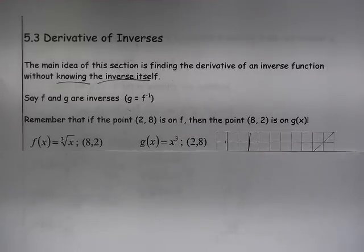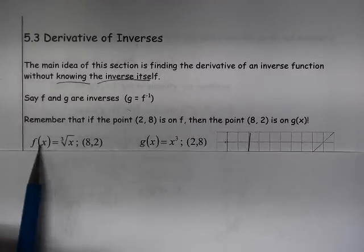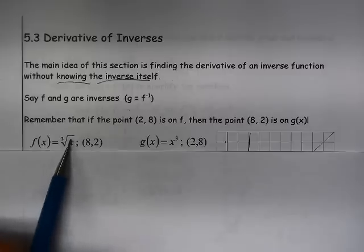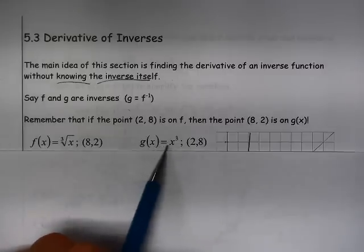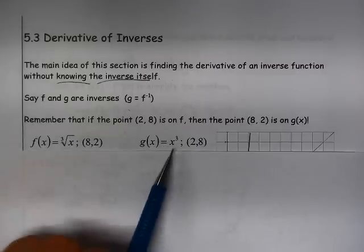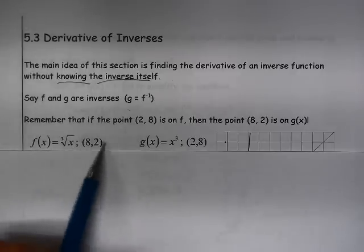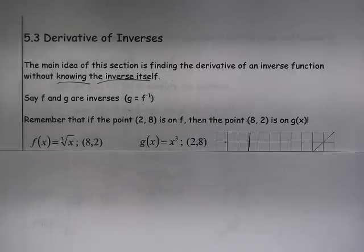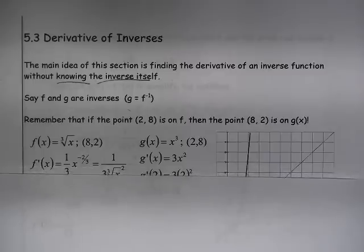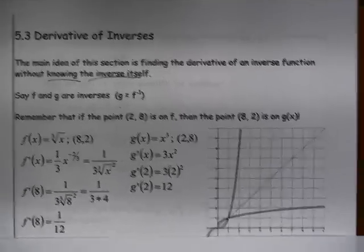So what we're going to do is take a look at these two situations. We're going to look at f as the cube root of x, and g of x is the inverse of that, so it's x cubed. And we're going to look on f at the point (8,2), and on g we're going to look at the point (2,8). So you can see the work here.